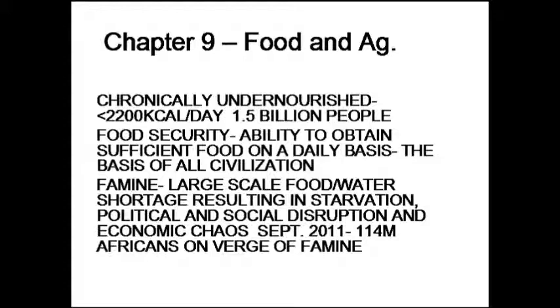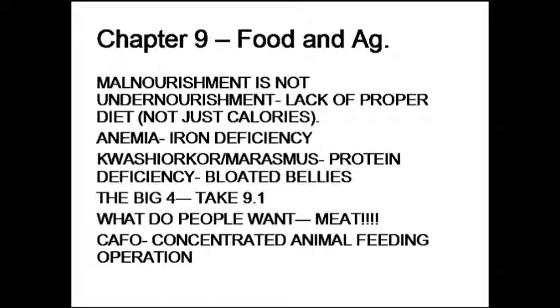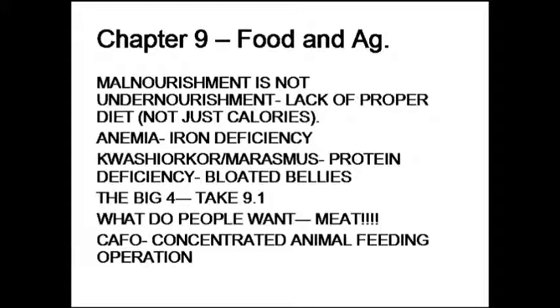Political and social disruption and economic chaos are the primary causes of famine. Yes, there's enough food on our planet today to feed every man, woman, and child at least 2,200 kilocalories a day — on the other hand, people are starving. In September 2011, there was a tremendous drought in the Horn of Africa — talking about Ethiopia, Somalia, the Sudan, Darfur. At that time, the World Health Organization classified 114 million individuals on the verge of starvation, and indeed many of them did die. Again, we always begin our chapters with definitions — that's the nature of science.